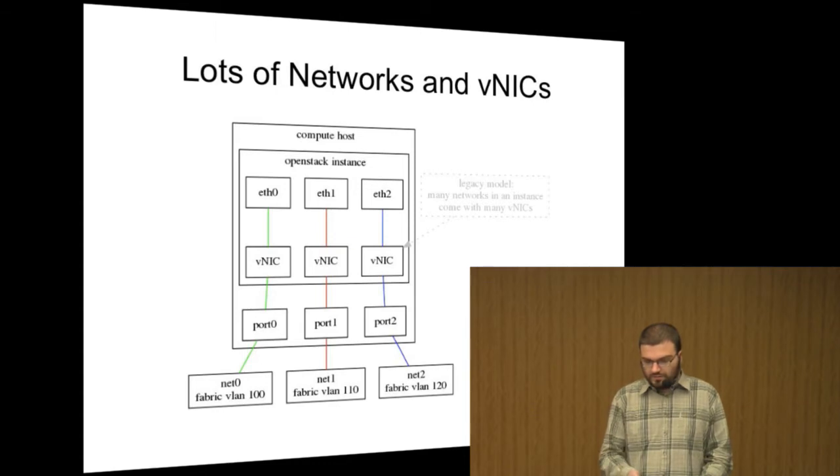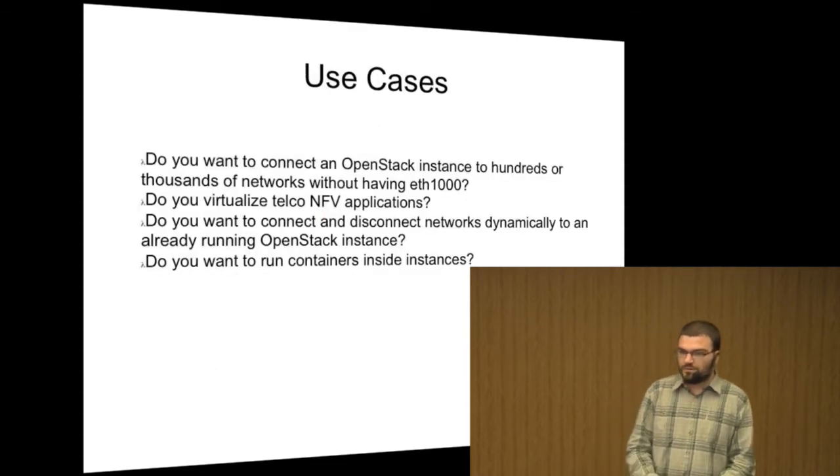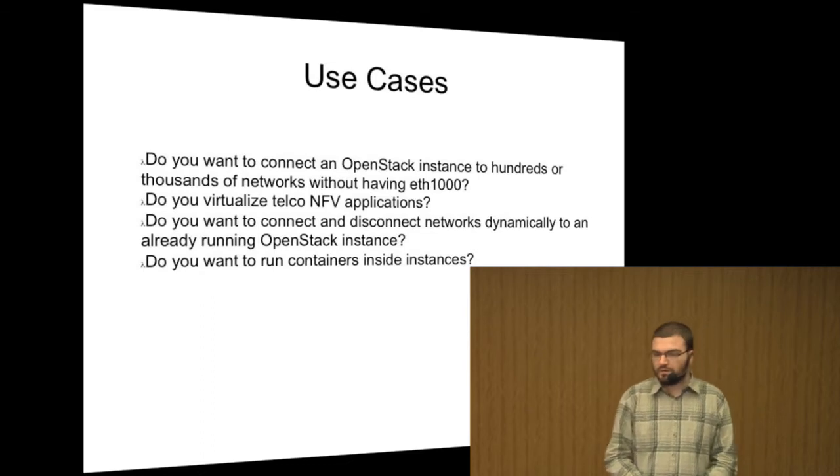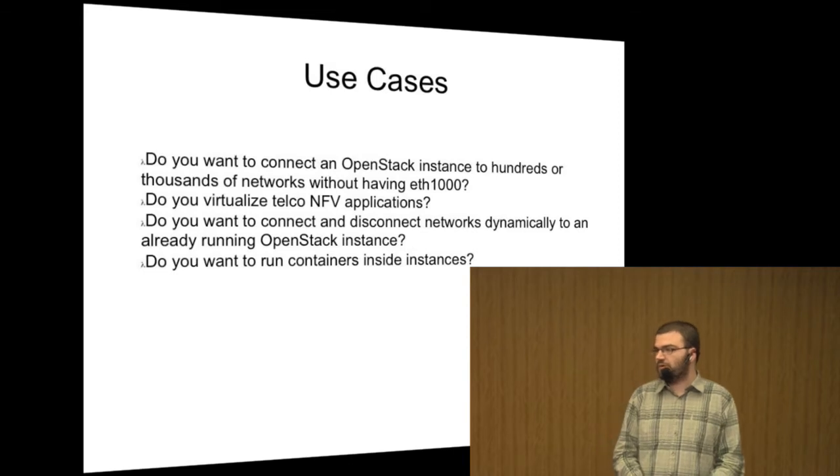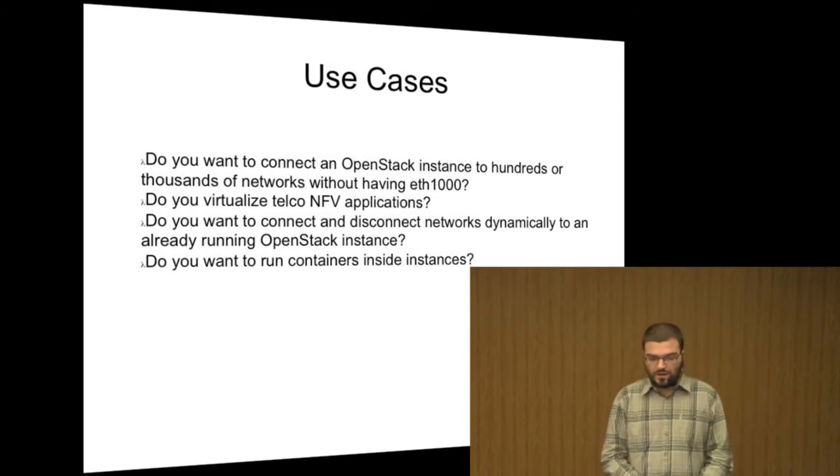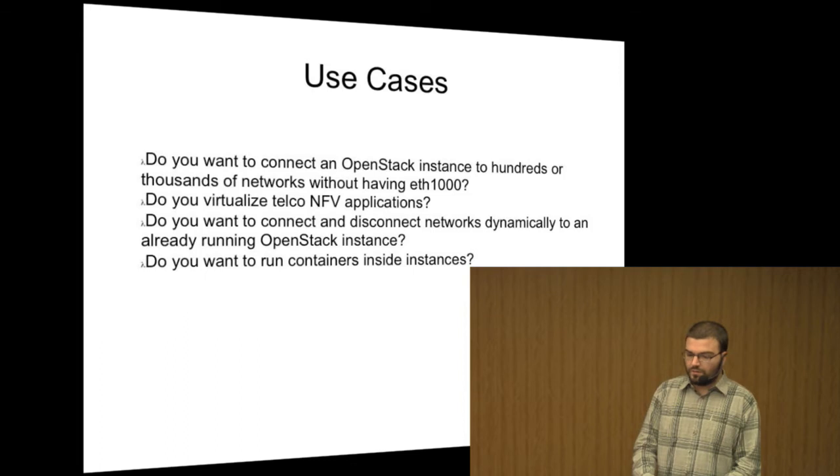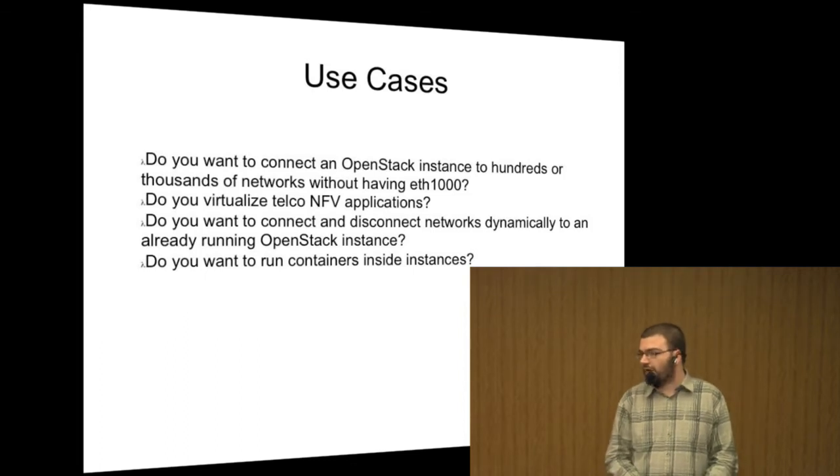To sum up what kind of use cases our feature is about, let me show you this slide. Think of use cases where you can have a network middle box running in a VM, and that network middle box needs to access hundreds of thousands of networks. For example, like telco network function virtualization applications, or if you have any need to dynamically join and leave networks while your instance is already running.